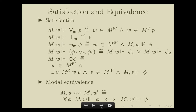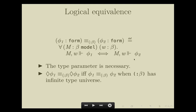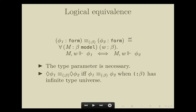If two worlds satisfy exactly the same modal formulas, we say they are modally equivalent, written with a corresponding symbol. We also have a notion of logical equivalence between modal formulas: phi1 is equivalent to phi2 if phi1 is satisfied if and only if phi2 is satisfied for any world in any beta-model. The type parameter here is necessary because if we omit it, then there will be a type — namely beta — which appears only on the right-hand side of the definition but not on the left-hand side, which is not allowed in HOL.